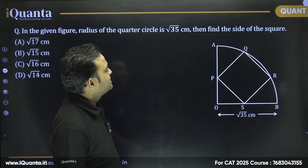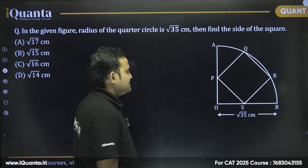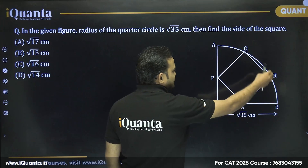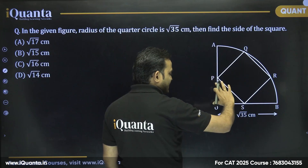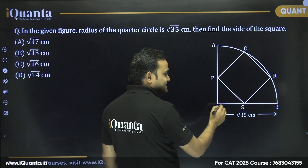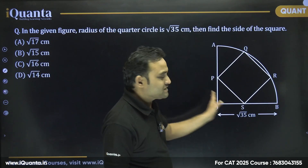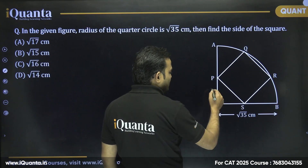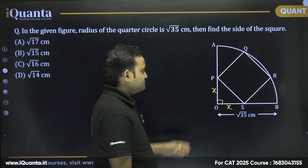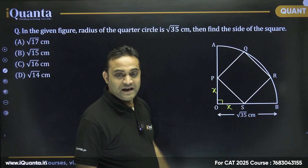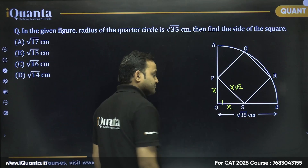The next question says: in the given figure, the radius of the quarter circle is √35 cm. Find the side of the square. If PQRS is a square and O is the center, by symmetry OP = OS = X. Since this is a quarter circle, angle SOP = 90°, so side PS = X√2.